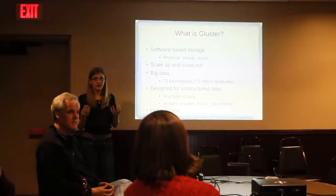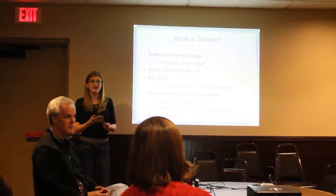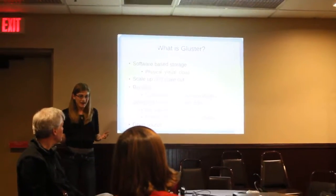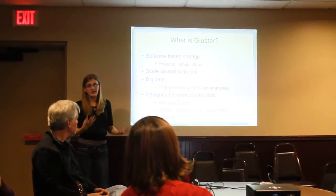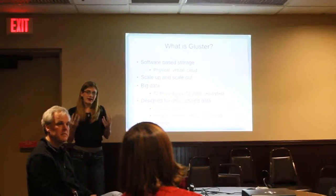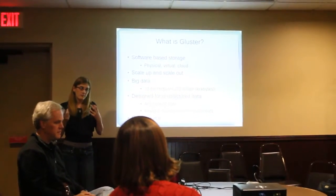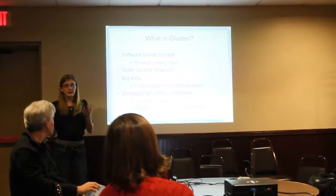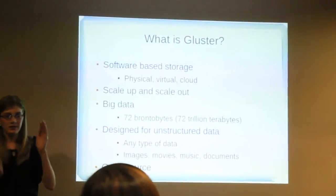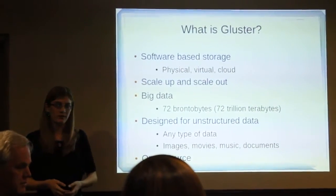The numerical capacity of Bluster is 72 brontobytes — that's 72 trillion terabytes. So, lots of big files. And it's designed for unstructured data, which means it's designed for any sort of data — like images, movies, or documents — unlike a database, which is really rigid. And Bluster is for all sorts of files. Bluster is also open source.